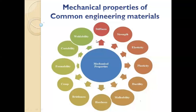Important mechanical properties a designer or engineer must know include: strength, elasticity, plasticity, ductility, malleability, hardness, brittleness, creep, formability, castability, weldability, and stiffness. For example, to design a building column, you need to know the compressive strength of concrete and the tensile strength of steel to determine the required rebar diameter and concrete dimensions.